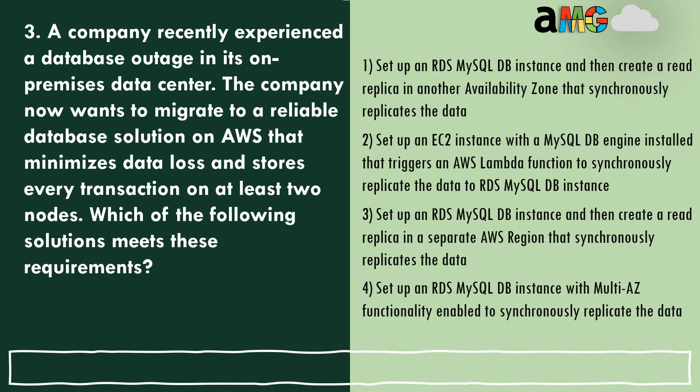Question 3: A company recently experienced a database outage in its on-premises data center. The company now wants to migrate to a reliable database solution on AWS that minimizes data loss and stores every transaction on at least two nodes. Which of the following solutions meets these requirements? You have 10 seconds — the options are quite detailed so take some additional time.